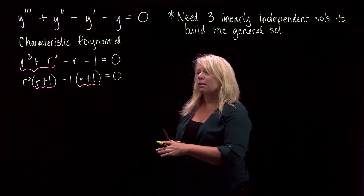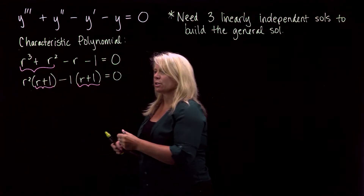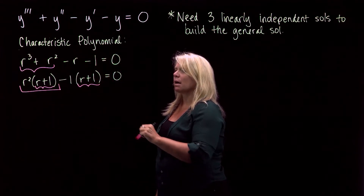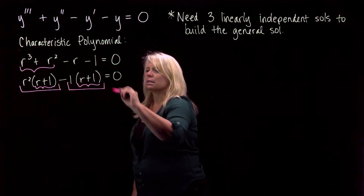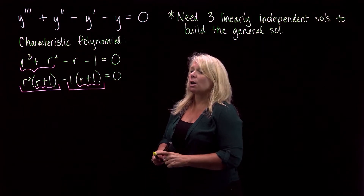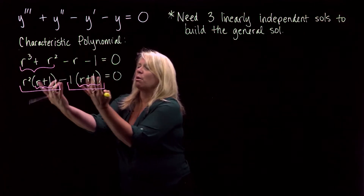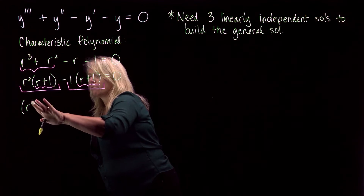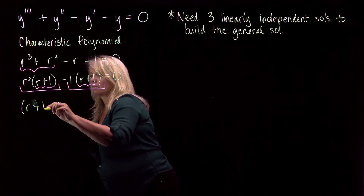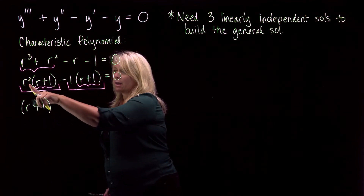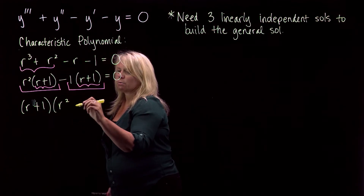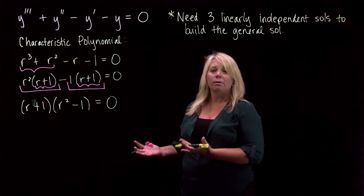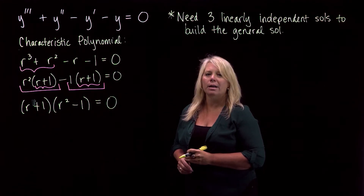Now treat the expression as two giant terms: r² times (r + 1) and −1 times (r + 1). Factoring (r + 1) out of both terms gives (r + 1)(r² − 1). That completes the factoring by grouping strategy — look that up if you need a bit more review.